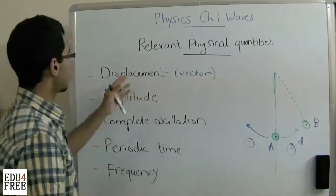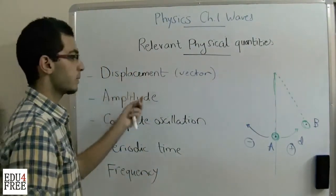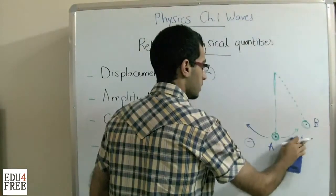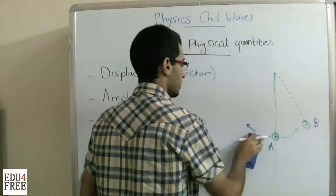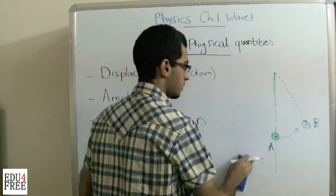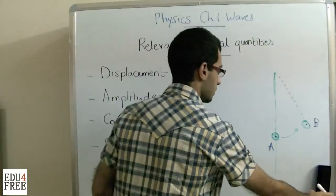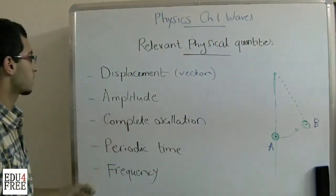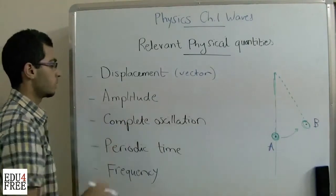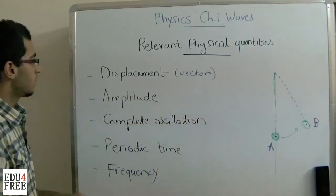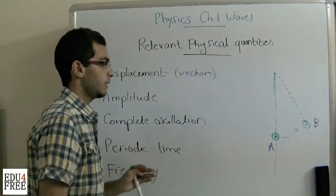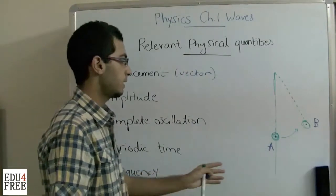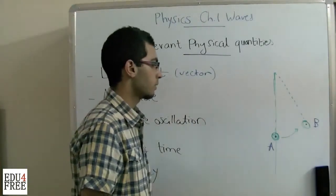This is the first point — the displacement. The second physical quantity is the amplitude. The amplitude is the maximum displacement of the vibrating object.